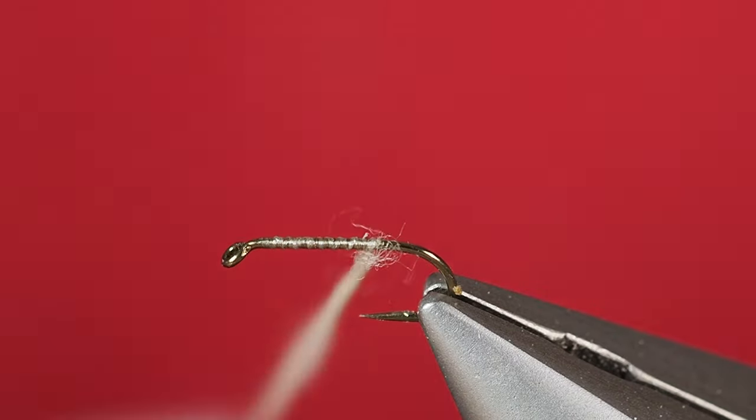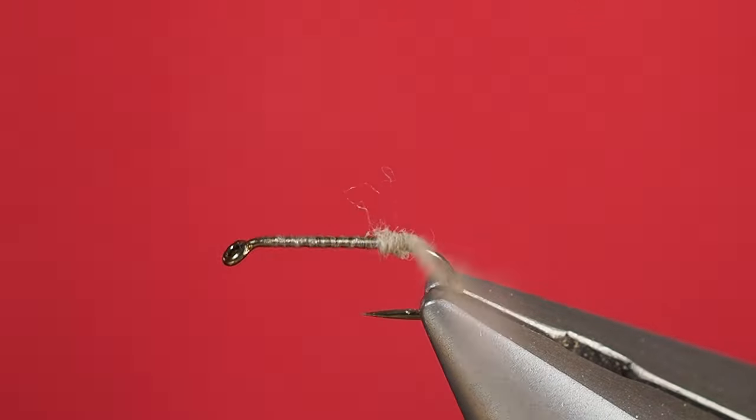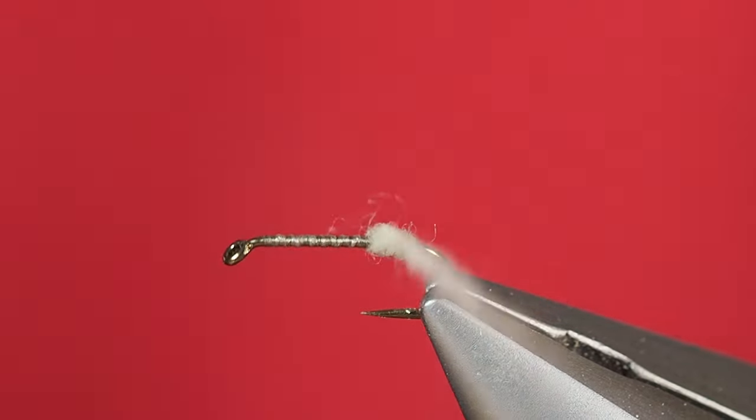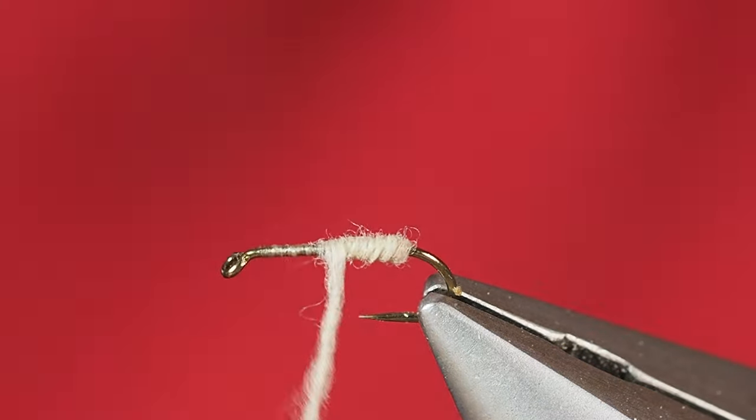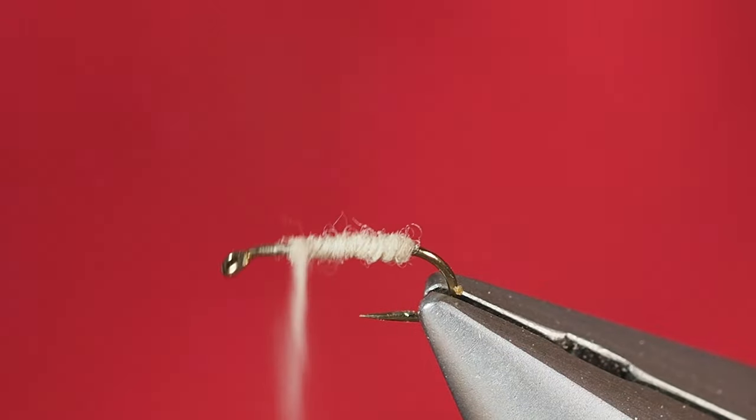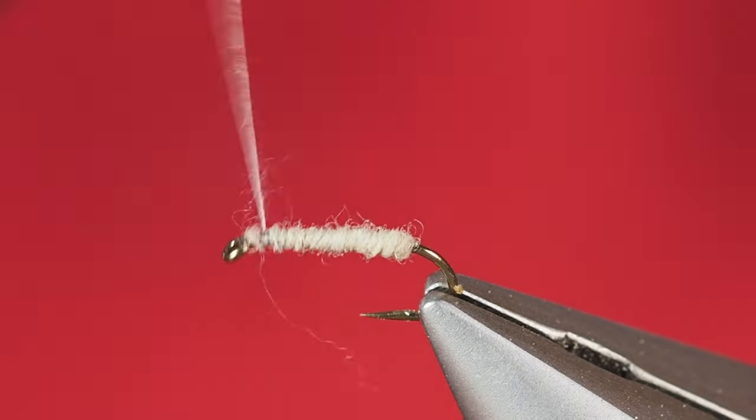With the caddis pattern, we're going to want it a little bit thicker towards the back. So I'm going to take a few overlapping wraps here more towards the back and tighten up my dubbing as I go along. We're going to build basically a reverse taper where this is going to get a little bit thinner the further we move up towards the eye of the hook.